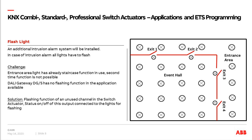The solution is to use a free output in the switch actuator — an unused channel with no circuit behind — and program the flashing function there. We can also program a status telegram, a status feedback from that switch actuator channel. This status as a telegram on the bus gives us the information whether the light is on or off. With a flashing function, it changes from on to off and vice versa — a real status of the relay position. This I assign to the other channels A and B, and also to the DALI gateway. Then it works as a kind of logic for flashing light.